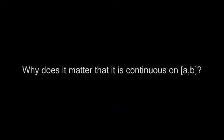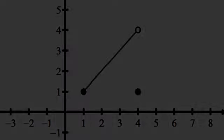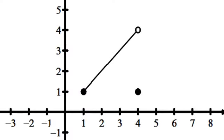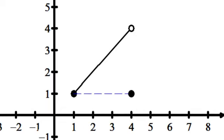Why does it matter that the function is continuous on the closed interval? Here's a case where the function is differentiable on all points between 1 and 4, but the function is not continuous on the closed interval. The slope between the endpoints at 1 and 4 is 0. But was there any point between 1 and 4 where the slope was 0? No — and the reason there didn't have to be is because the function wasn't continuous.